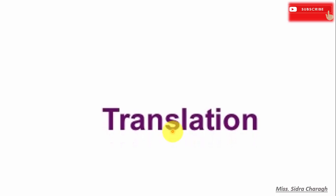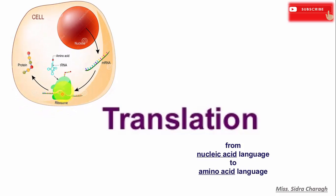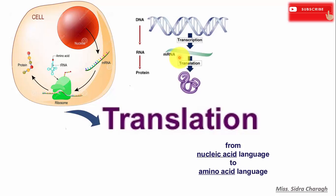Today we will discuss translation. Translation is the process where proteins are synthesized using messenger RNA that is transcribed from DNA in the nucleus. Translation is the second part of the central dogma of molecular biology, which describes how genetic code is used to make an amino acid chain. In this lecture we will explore the mechanics involved in polypeptide chain synthesis.